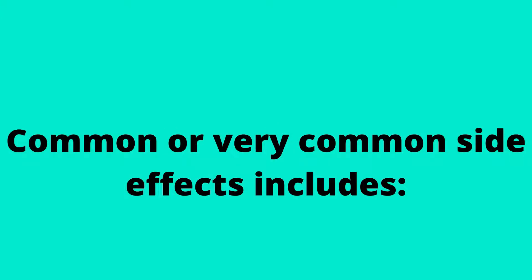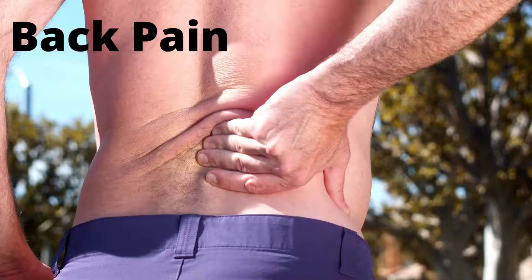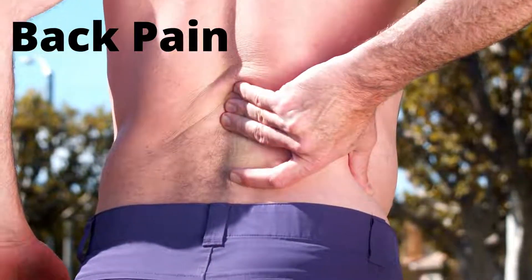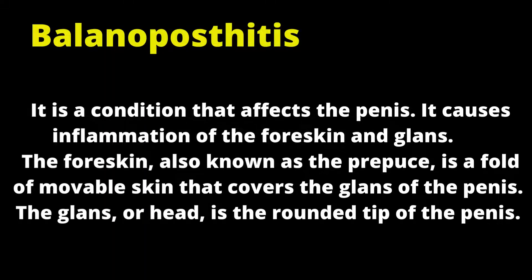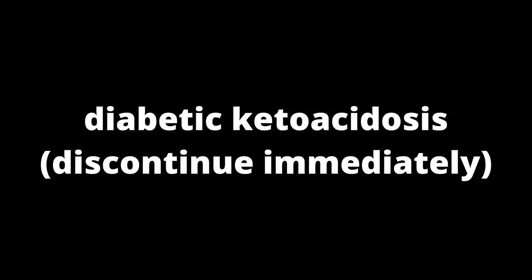Common or very common side effects include back pain, and balanoposthitis — a condition affecting the penis involving inflammation of the foreskin and glans. The foreskin, also known as the prepuce, is a fold of movable skin covering the glans of the penis. The glans, or head, is the rounded tip of the penis. Dapagliflozin also causes diabetic ketoacidosis; if you experience its signs and symptoms, discontinue it immediately.